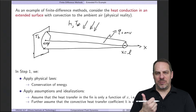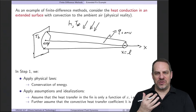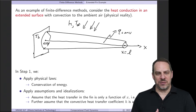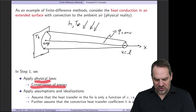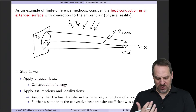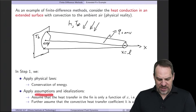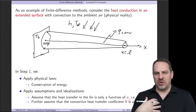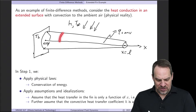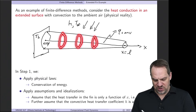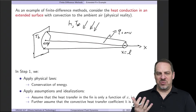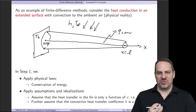Step one is applying the appropriate physical laws and whatever idealizations or simplifications make sense for this problem. The appropriate physical law is conservation of energy, since it's a heat transfer problem. The first assumption we make is that heat transfer in the fin is only a function of x — in other words, it's a one-dimensional problem, and at every cross-section of the fin we assume the temperature is equal. Every time we make such an assumption, we need to think about how good or bad it might be.